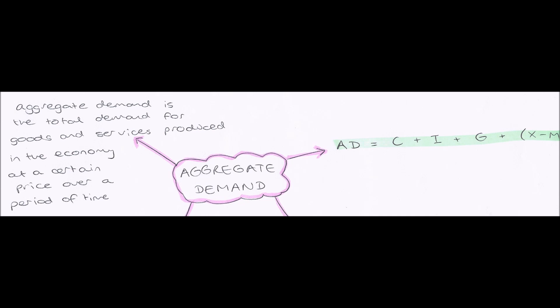And aggregate demand can be worked out mathematically using the formula AD, aggregate demand, equals C, consumption, plus I, investment, plus G, government spending, plus brackets X, minus M.